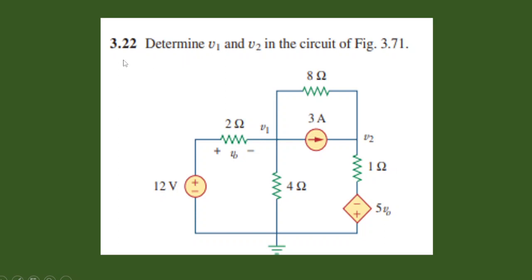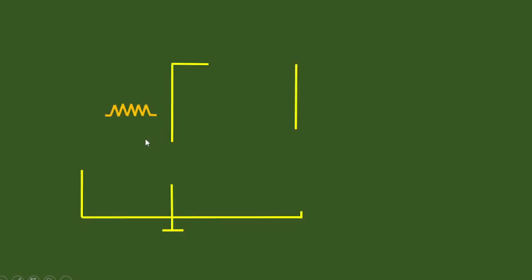Today we are going to solve problem 3.22 from Fundamentals of Electric Circuits by Alexander and Sadiku, 5th edition. The question is to determine V1 and V2. So let's draw the circuit so that it is easier for us to analyze.